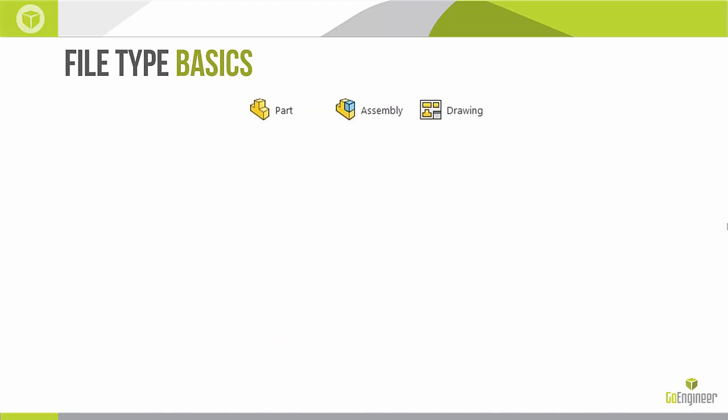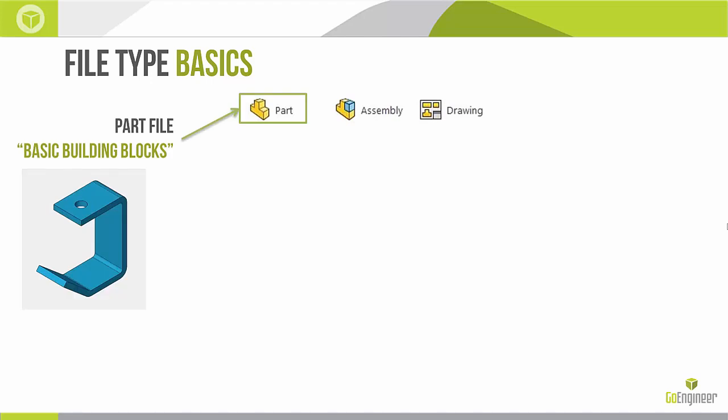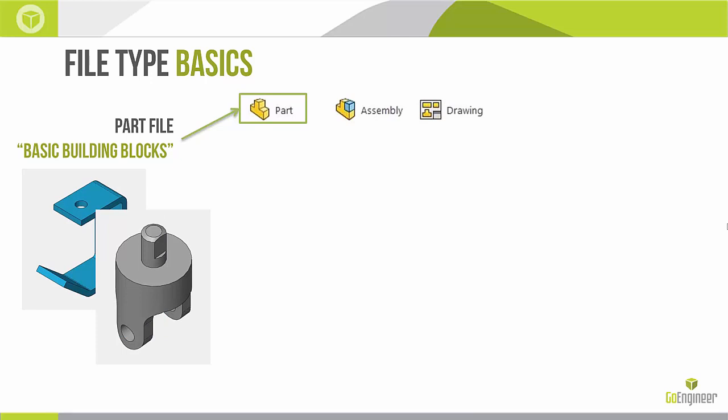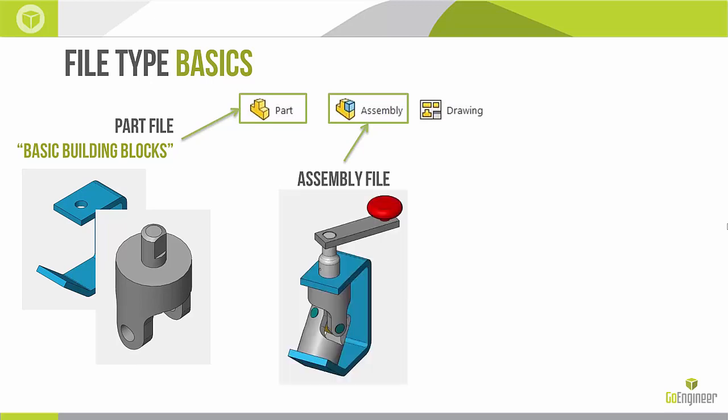Let's go over some file type basics. There are three main file types within SOLIDWORKS. We have the part file — these are our basic building blocks for representing a base-level part. For example, a bracket or a yoke. We then take these part files and put them all together in an assembly, combining a dozen or so parts to create something like a turn crank.